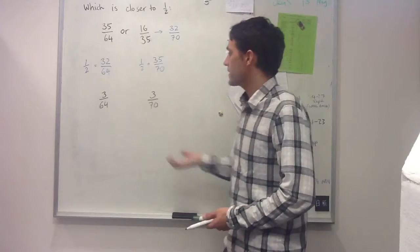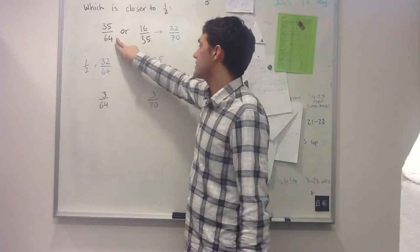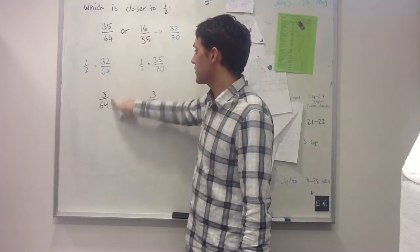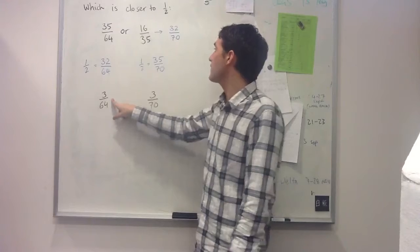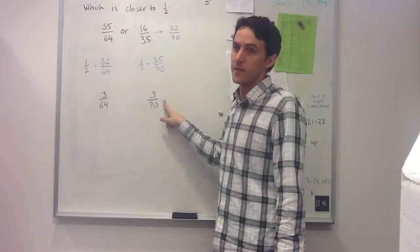Now I'm asking which of these numbers are smaller. 35/64 is 3/64 away from a half, whereas 16/35 is 3/70 away from a half.